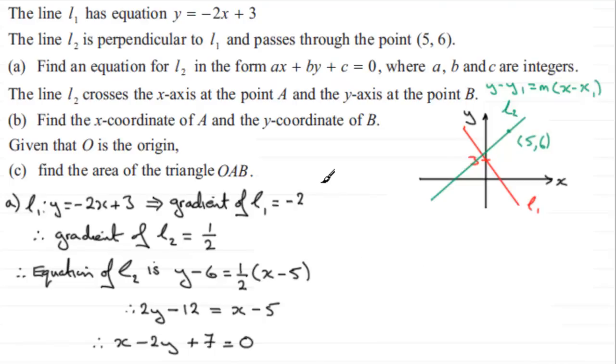So next we just need to come down here and we'll look at doing part B. Now in part B, it says that the line L2 crosses the x-axis at the point A. So this would be the point A here. Let's just mark that in as A, and the y-axis at the point B. So we'll just say that that's B there. And we've got to find the x-coordinate of A and the y-coordinate of B.